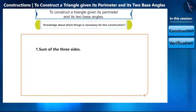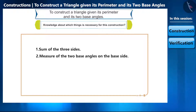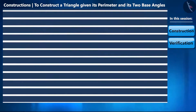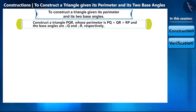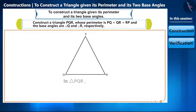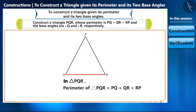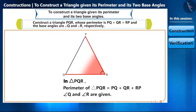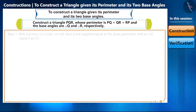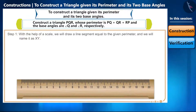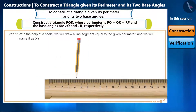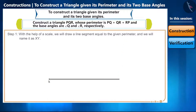The information necessary for this construction is: one, the sum of all three sides, and two, the measure of the two base angles on the base side. For example, let's assume we have to construct a triangle PQR whose perimeter is PQ plus QR plus RP, and the base angles are angle Q and angle R respectively. Step one: with the help of a scale, draw a line segment equal to the given perimeter and name it XY, so PQ plus QR plus RP equals XY.